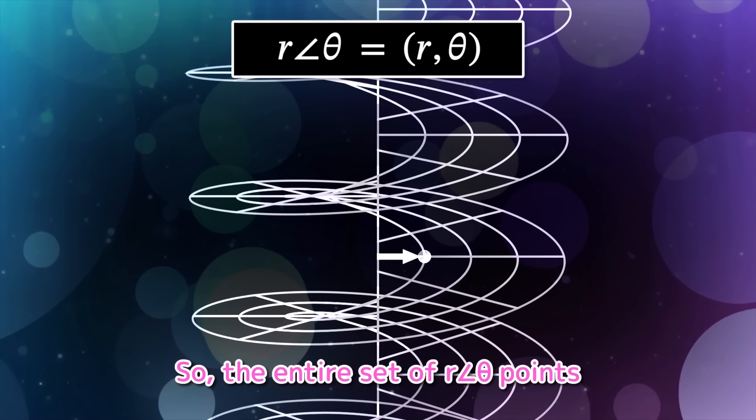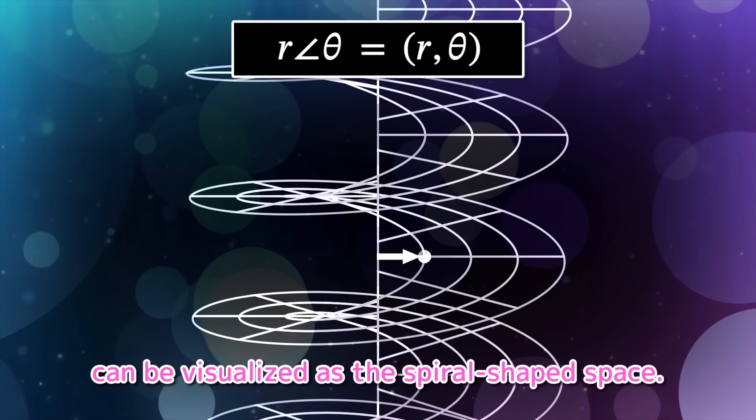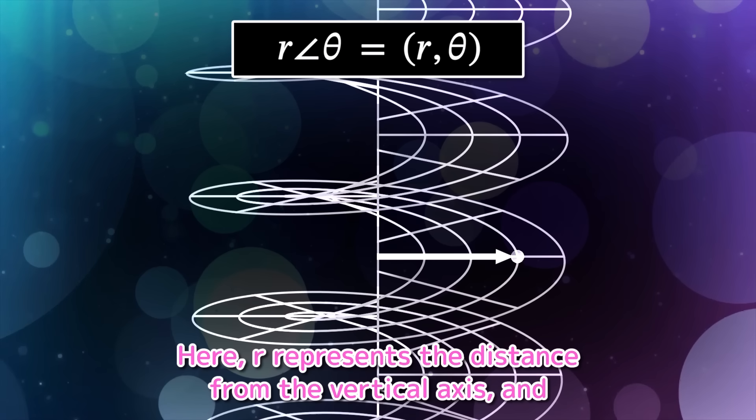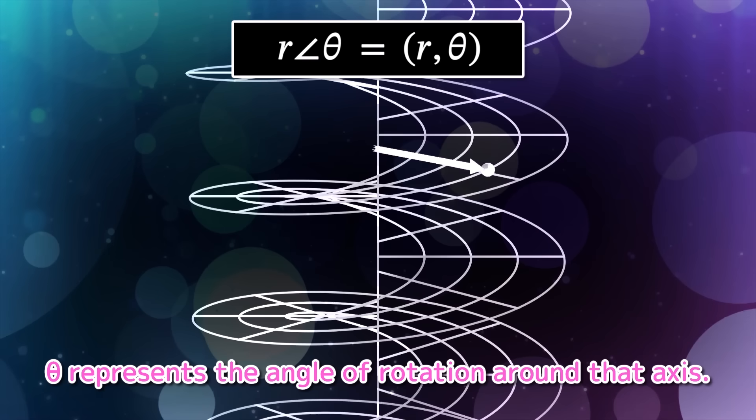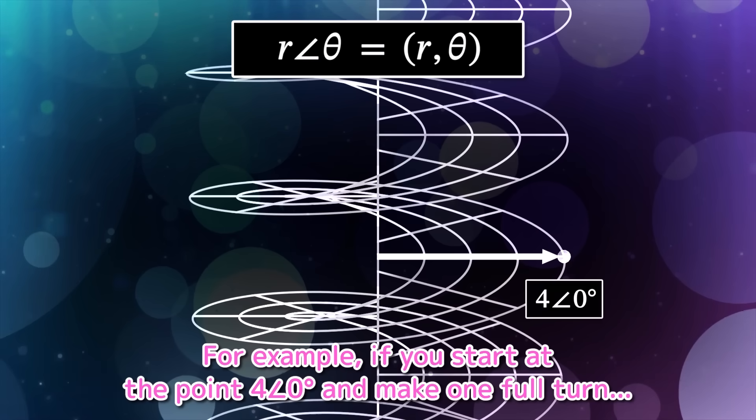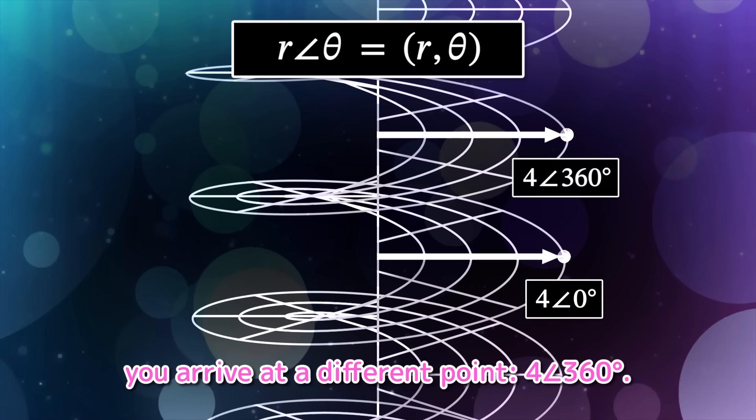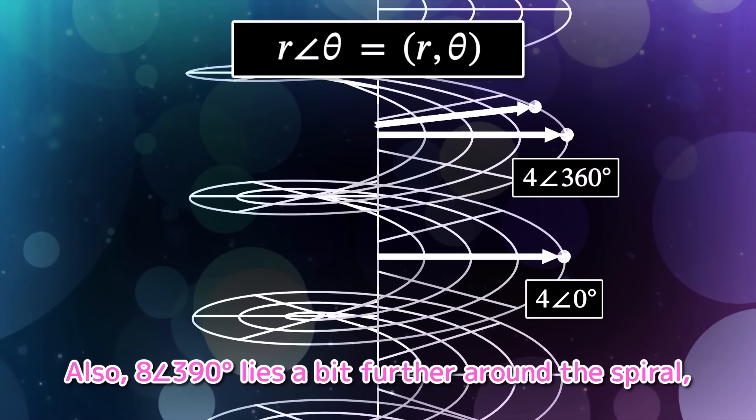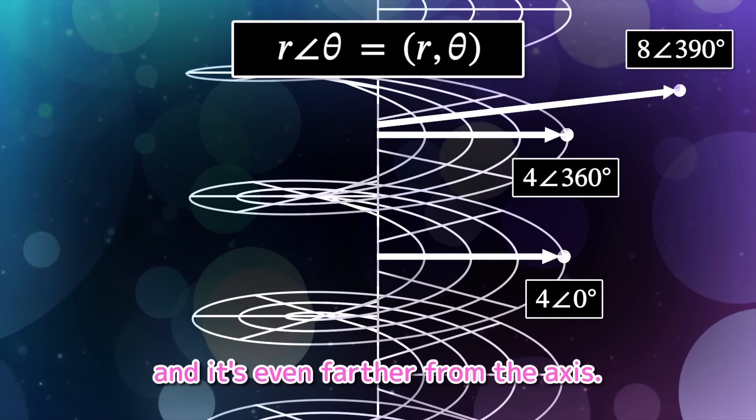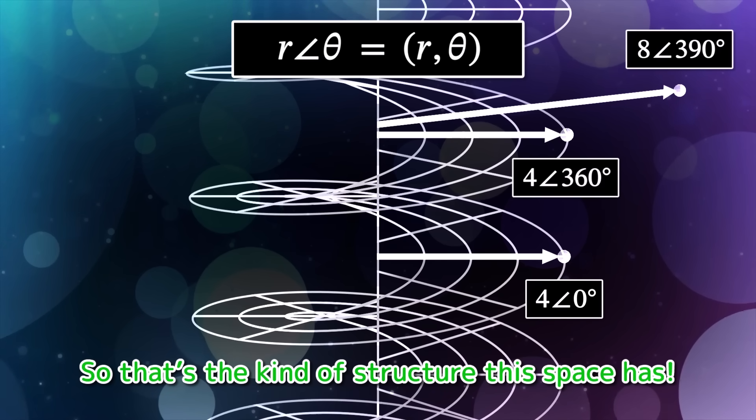As a pair? I get it. Then we can treat r∠0° and r∠360° as different. Because 0 and 360 are different numbers, these two are different pairs. But somehow it feels like I'm being tricked. I understand how you feel. But for now, let's keep moving forward. So, the entire set of r∠θ points can be visualized as the spiral-shaped space.